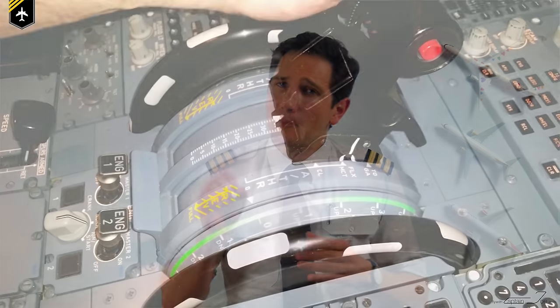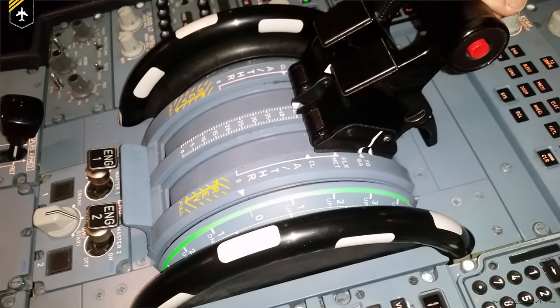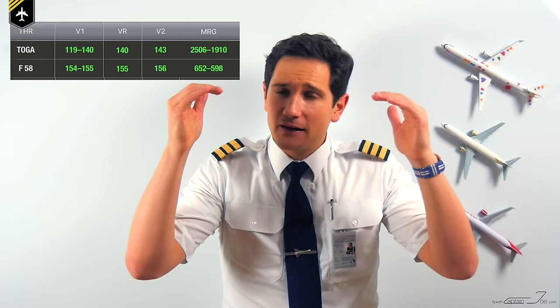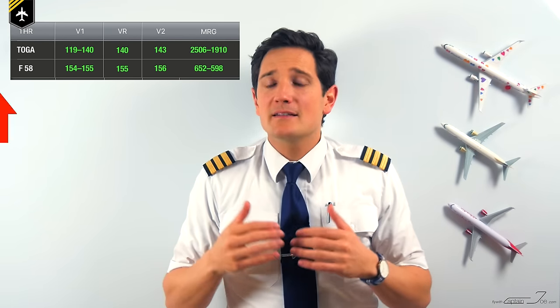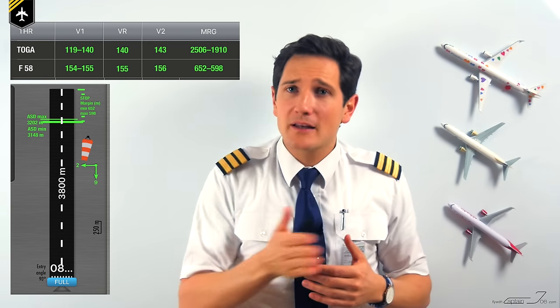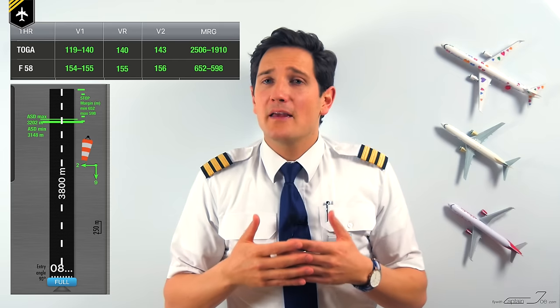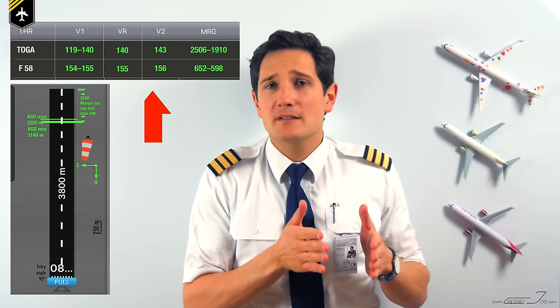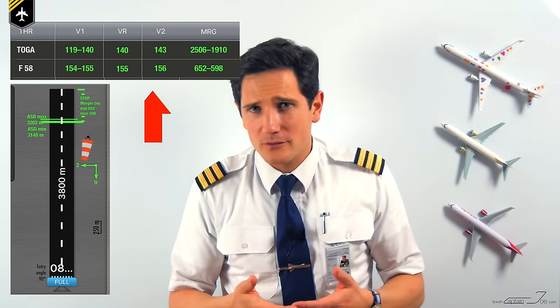Although you know there is some extra power left, which you can always access by applying TOGA at the one-third detent on the thrust lever column, giving you maximum thrust available. The result of using a high flex temperature is that the speeds are higher for liftoff, because the plane won't accelerate as quickly as it could, therefore using up more runway, resulting in a shorter stop distance in case of a rejected takeoff.